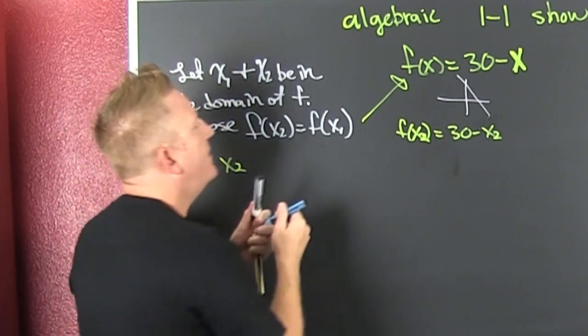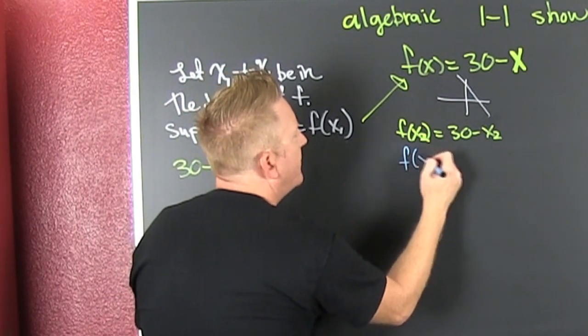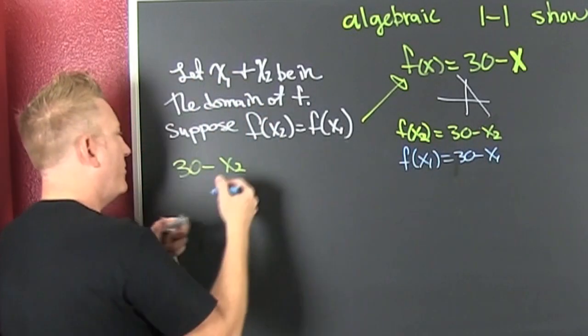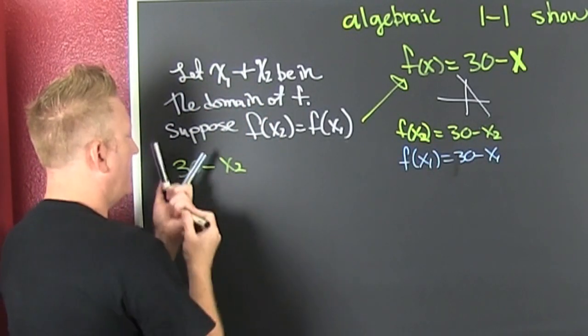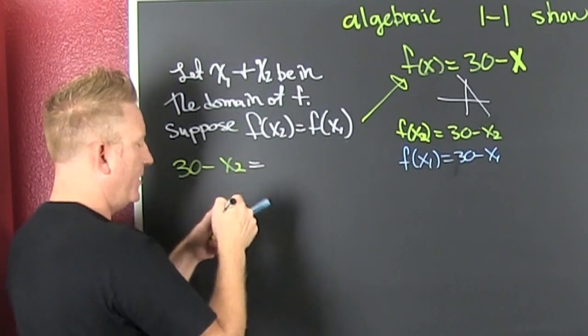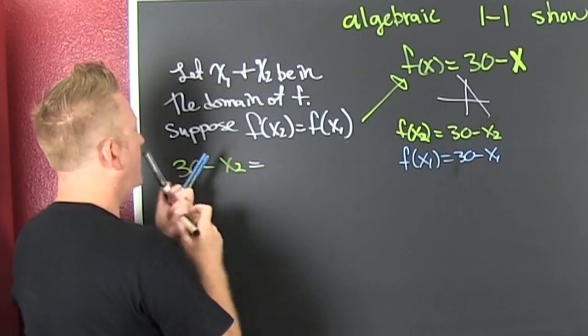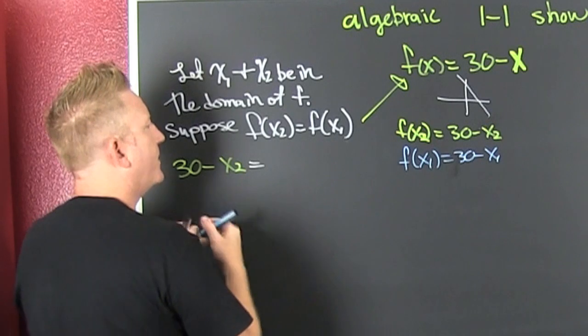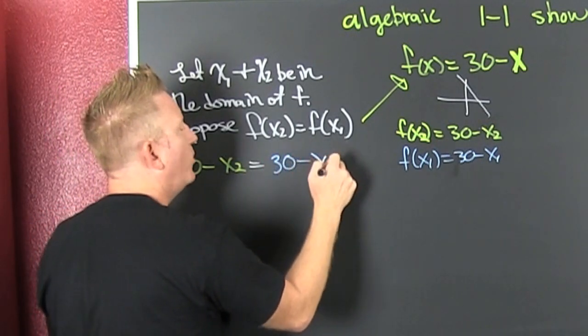Now, if I was trying to find f of x1, that'd be 30 minus x1. That's what I'm going to put over here. So that's blue, 30 minus x1.